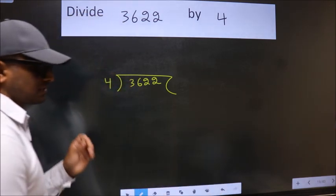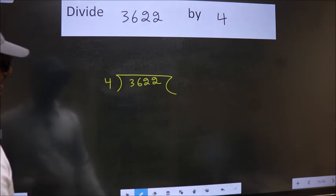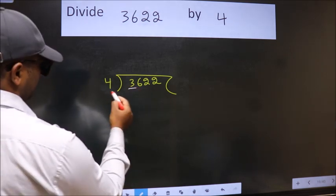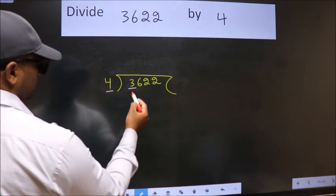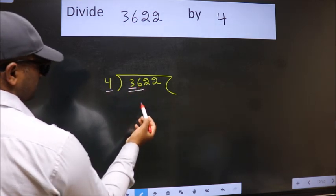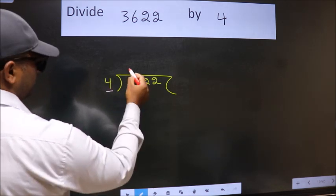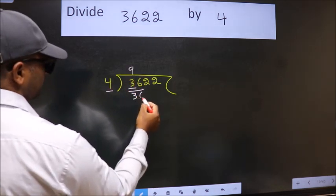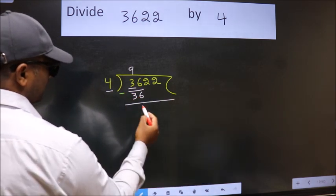This is step 1. Next, here we have 3, here 4. 3 is smaller than 4, so we should take 2 numbers: 36. When do we get 36 in the 4 table? 4 nines are 36. Now we subtract and get 0.